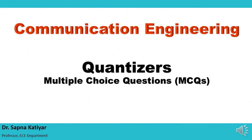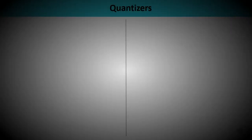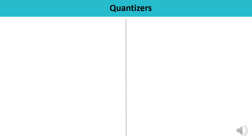Hello everyone, welcome to the video lecture series of communication engineering. Today's topic is quantizers. In this video I will be discussing multiple choice questions based on quantizers. You have studied about the quantizer — its function and classification. There are two types of quantization: uniform quantization and non-uniform quantization. Uniform quantization is also of two types: mid-tread and mid-rise.